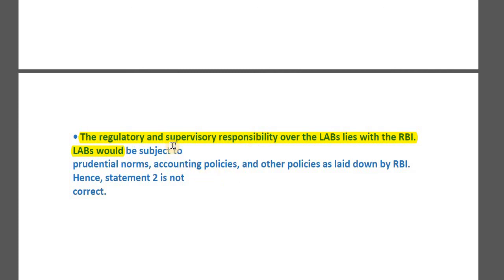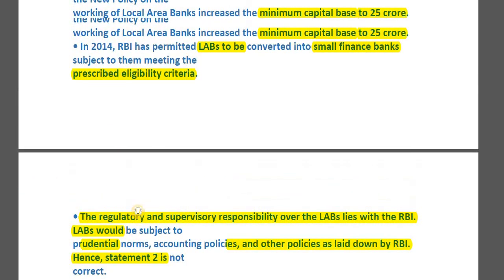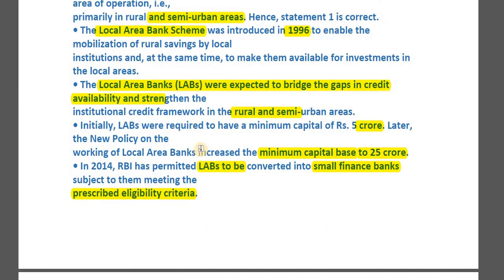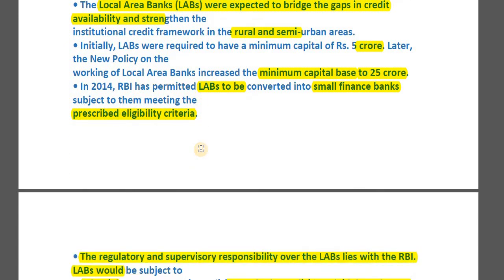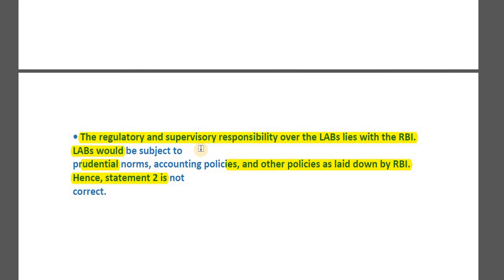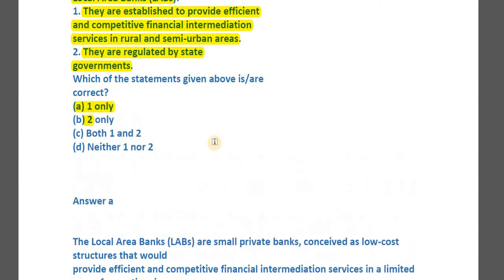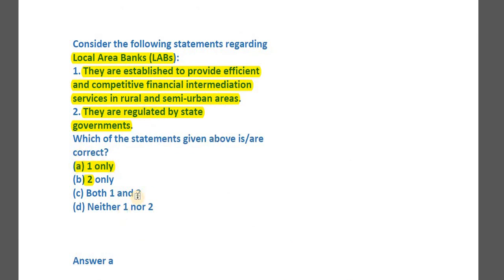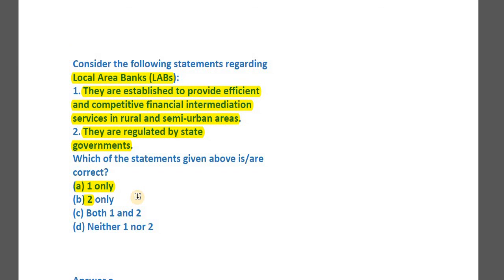Statement two is incorrect — regulatory and supervisory responsibility over local area banks lies with the RBI, not state governments. They are subjected to prudential norms, accounting policies, and other policies laid down by the Reserve Bank of India. Other than catering to rural and semi-urban areas, a local area bank functions like a normal bank under all RBI regulations. So only statement one is correct, and the answer is A. That completes all four questions — thank you for watching!